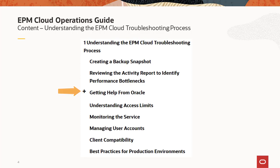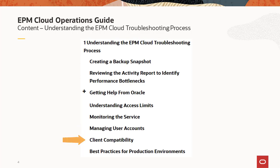The guide also answers questions about access limits — whether you can access the underlying operating system or database, and whether you can access system and app logs. In addition to activity reports, it covers other ways to monitor your system, such as going to the My Services portal for outage notifications, checking data size growth, and getting various audit reports. It also covers running performance testing using the EPM Automate Replay Command, questions about user accounts and SSO, client compatibility for browsers and Smart View, and best practices for production environments.